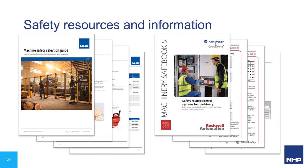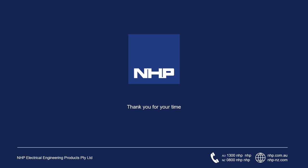That concludes today's presentation on safety products. By now you should have an appreciation for the depth of different safety products and their capabilities and some idea of how they're used for different safety applications. For more information, there is the NHP Machine Safety Selection Guide, and I also highly recommend Rockwell Automation's Machinery SafeBook 5 for more advanced guidance on designing machine safety control systems. Thank you for joining us. To watch again or find more webinars in this series, visit nhp.com.au or the NHP YouTube channel. Please contact your local NHP sales representative with any further questions.